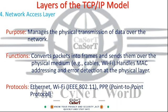Layer 4: Network Access Layer. Purpose: Manages the physical transmission of data over the network. Functions: Converts packets into frames and sends them over the physical medium, e.g., cables or Wi-Fi. Handles MAC addressing and error detection at the physical layer. Protocols include Ethernet, Wi-Fi (802.11), and PPP (Point-to-Point Protocol).